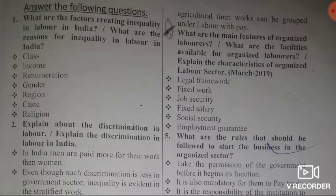The main features of organized laborers are: legal framework, fixed work, job security, fixed salary, social security, and employment guarantee. These are the main features of organized laborers.